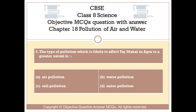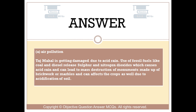Question number 5. The type of pollution which is likely to affect the Taj Mahal in Agra to a greater extent is? Option A: Air pollution. Option B: Water pollution. Option C: Soil pollution. Option D: Noise pollution. The right answer is Option A — Air pollution. The Taj Mahal is getting damaged due to acid rain. Use of fossil fuels like coal and diesel release sulfur and nitrogen dioxides, which causes acid rain, and can lead to mass destruction of monuments made of brickwork or marble, and can affect crops as well due to acidification of soil.